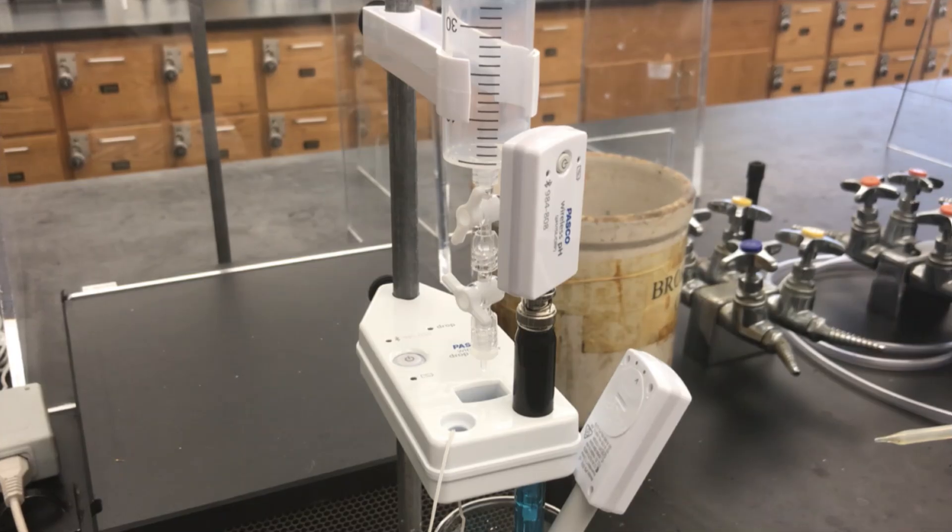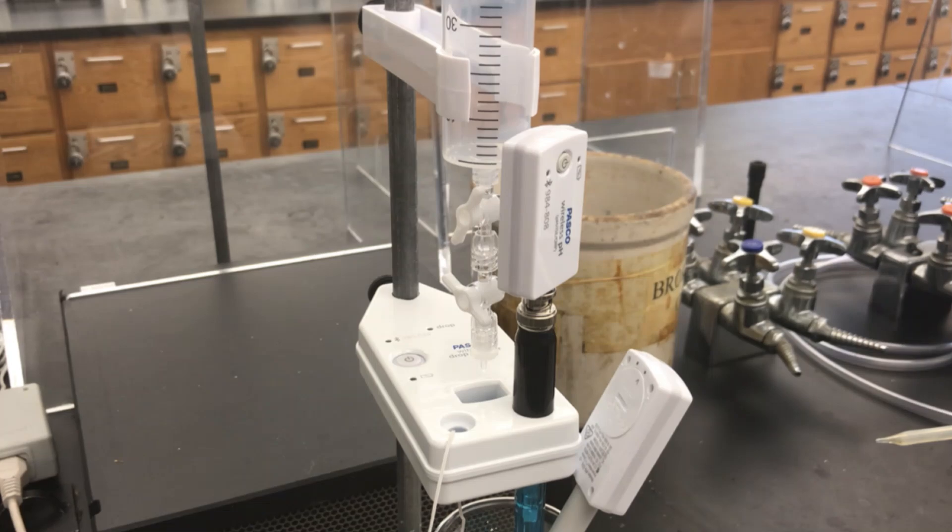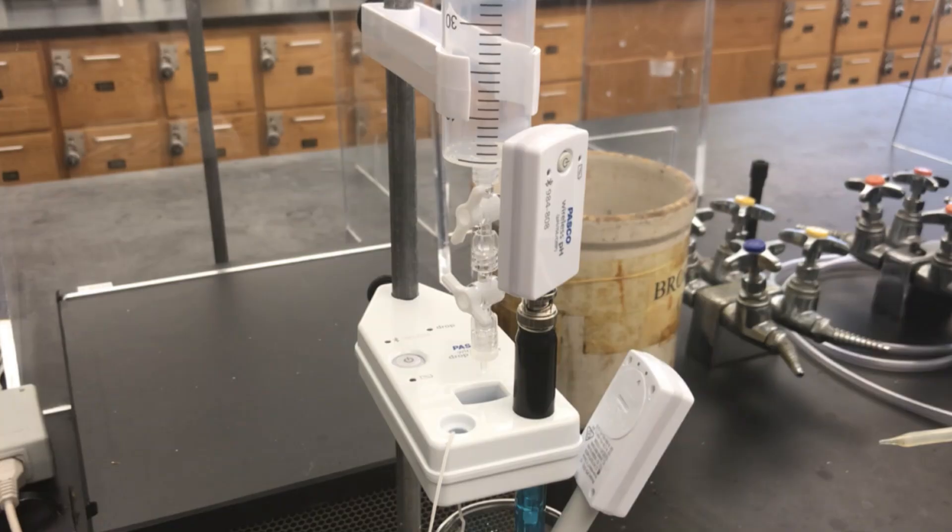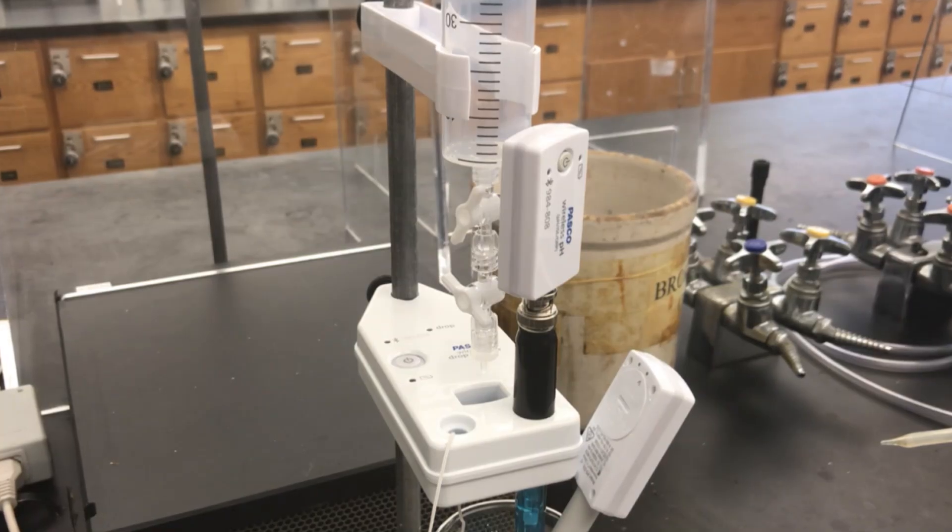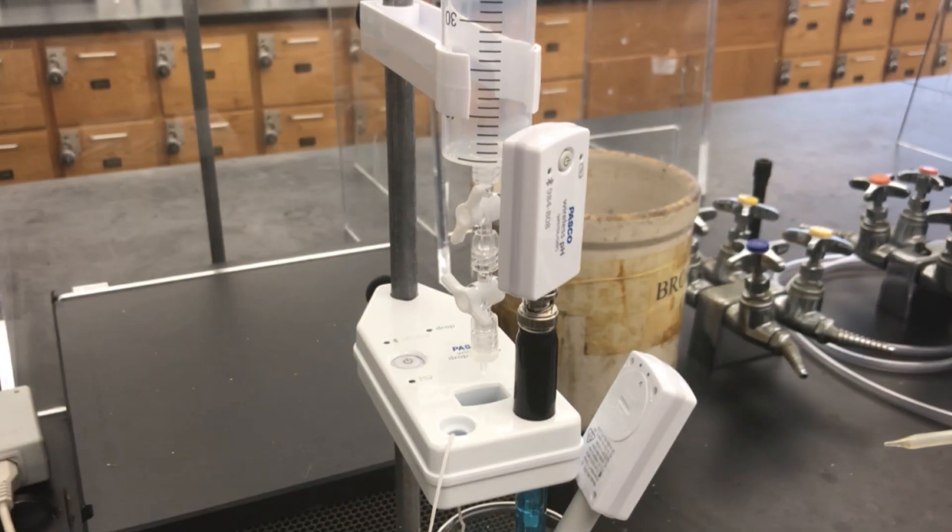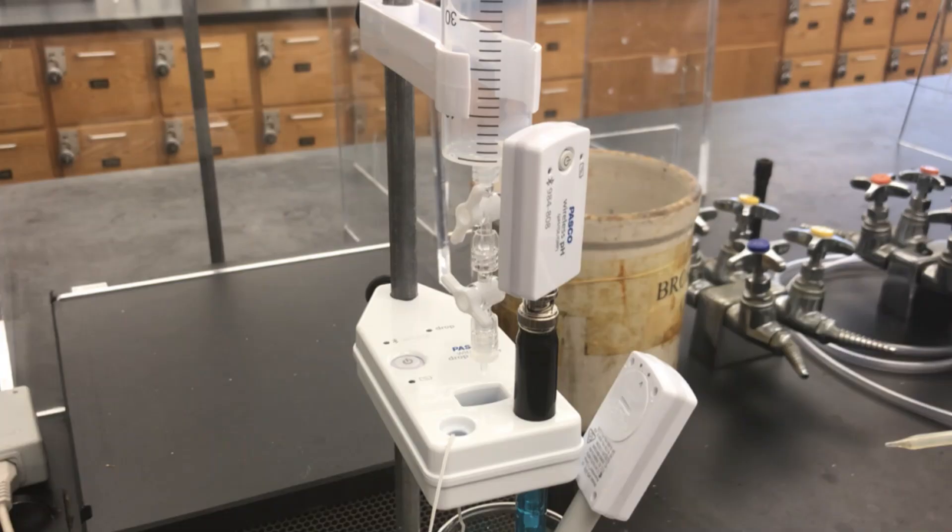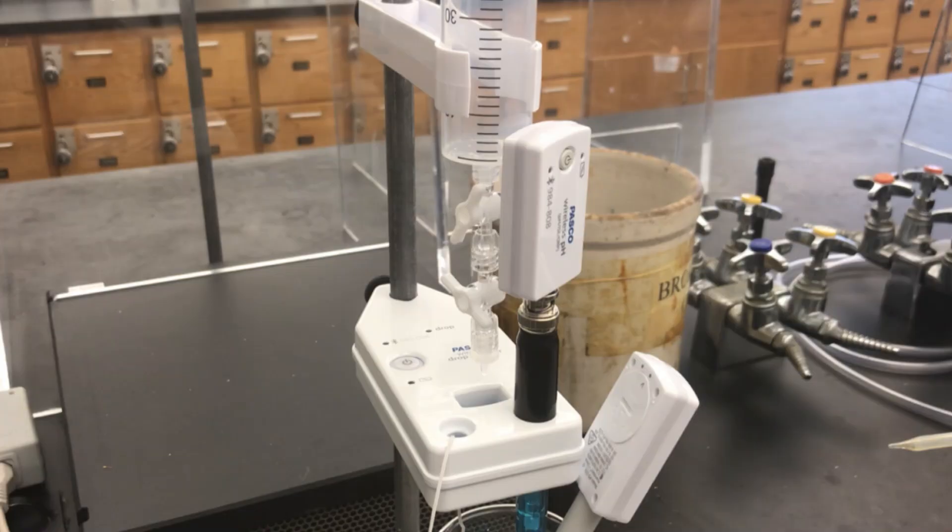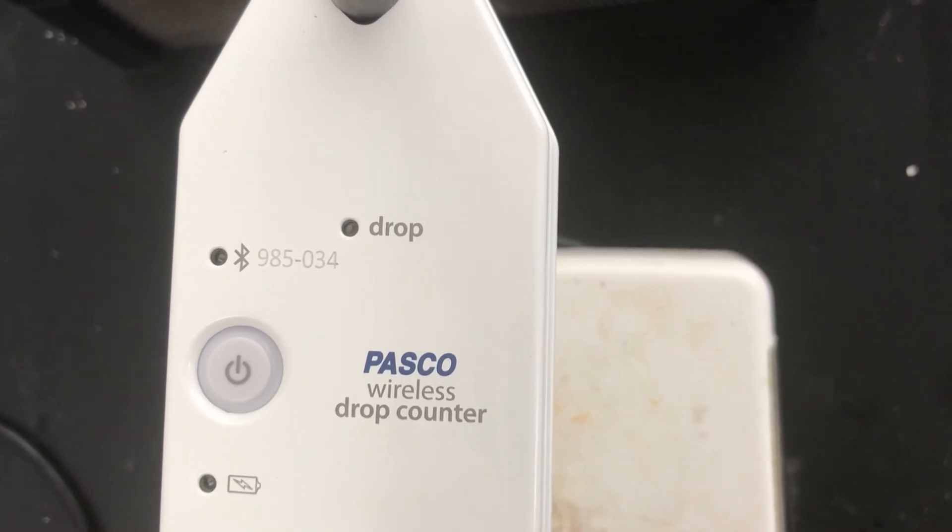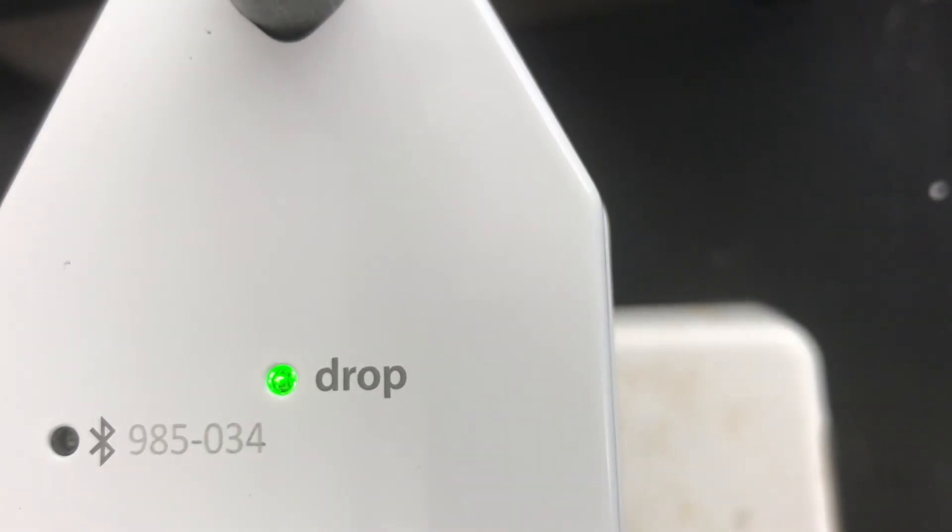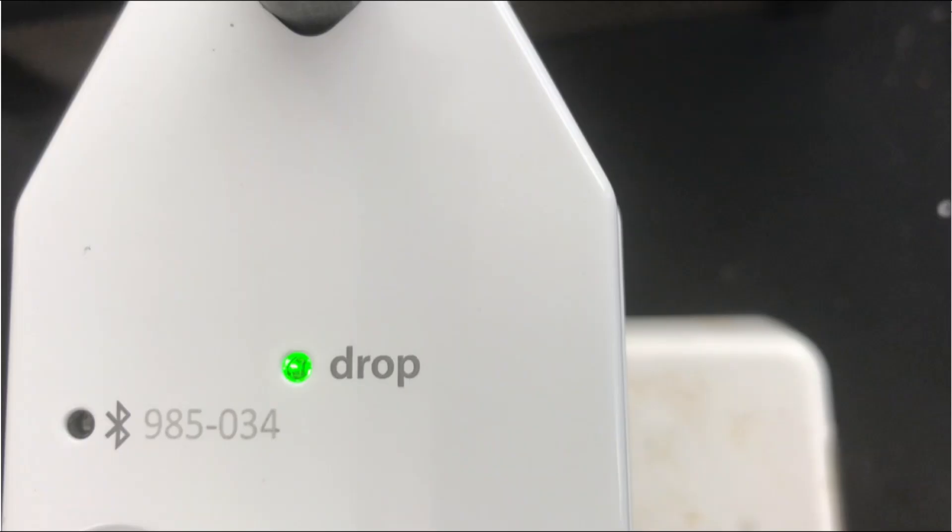Next, you'll want to check the position of the drop dispenser above the drop counter. You want to make sure that the tip on the drop dispenser is centered directly above the opening in the middle of the drop counter and that it's about a centimeter above the opening. It shouldn't be too high because then the drops can splash and if it's too low and sitting inside the drop counter, then the drops don't get counted. This is also a good time to check that the drop counter isn't dirty. There's a small green light on the top of the drop counter that will blink only as a drop passes through to be counted. If you look at your drop counter now and the light is on constantly, then the drop counter needs to be cleaned off using a kim wipe so it can record the drops correctly.